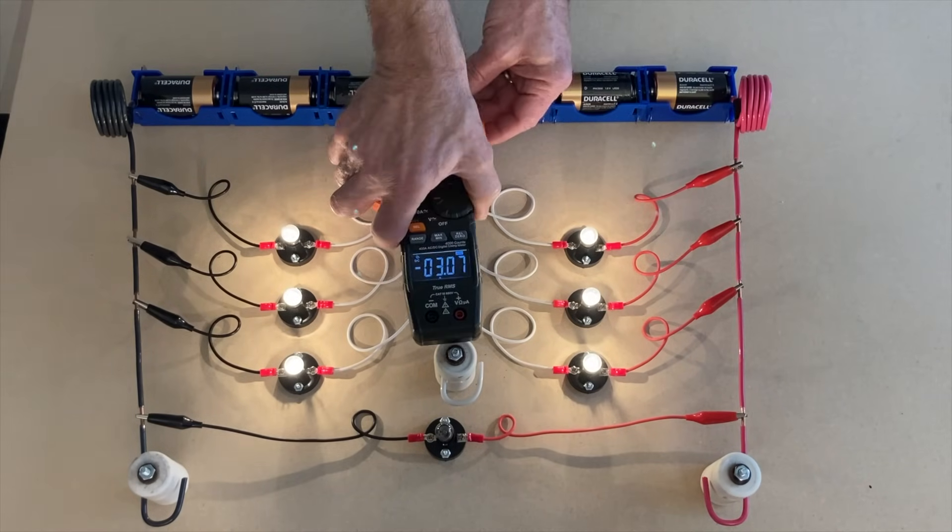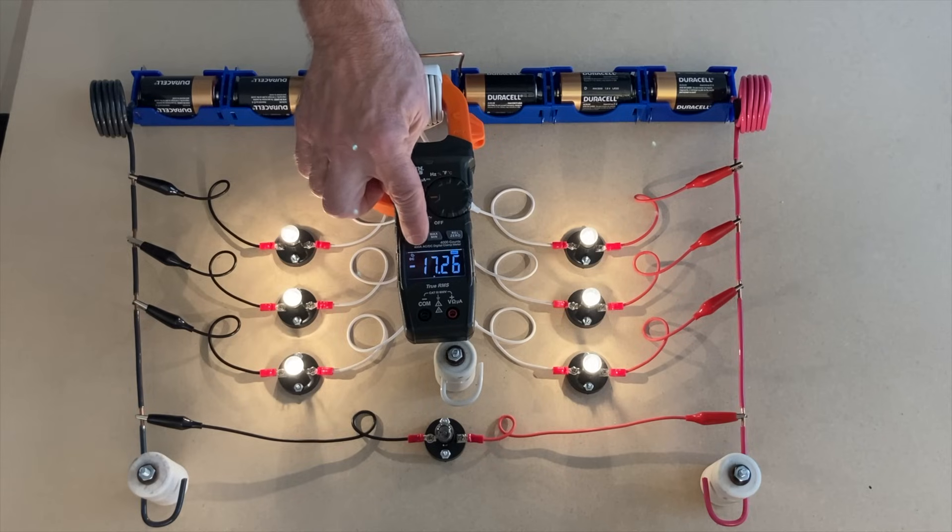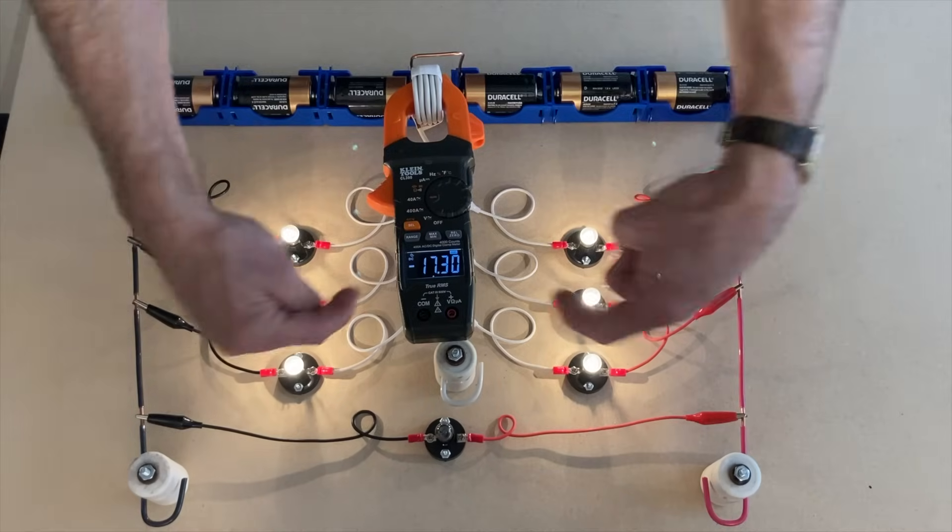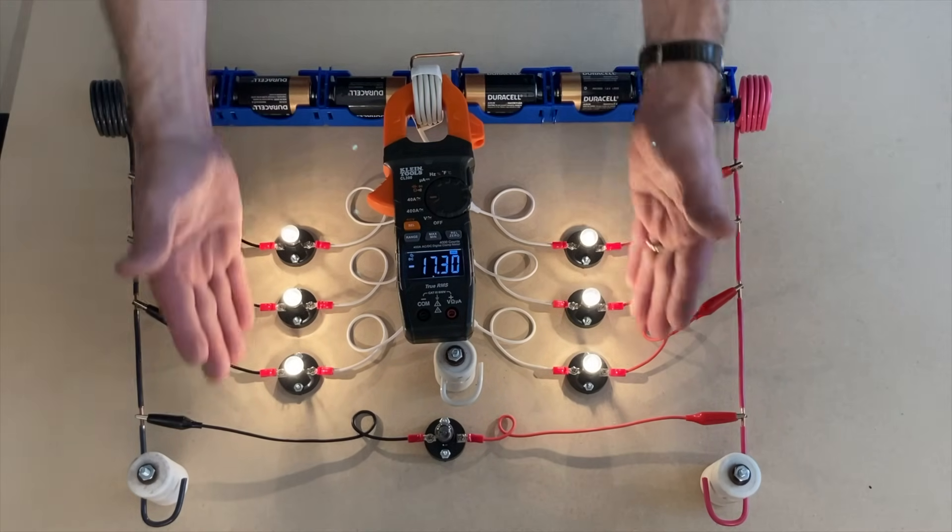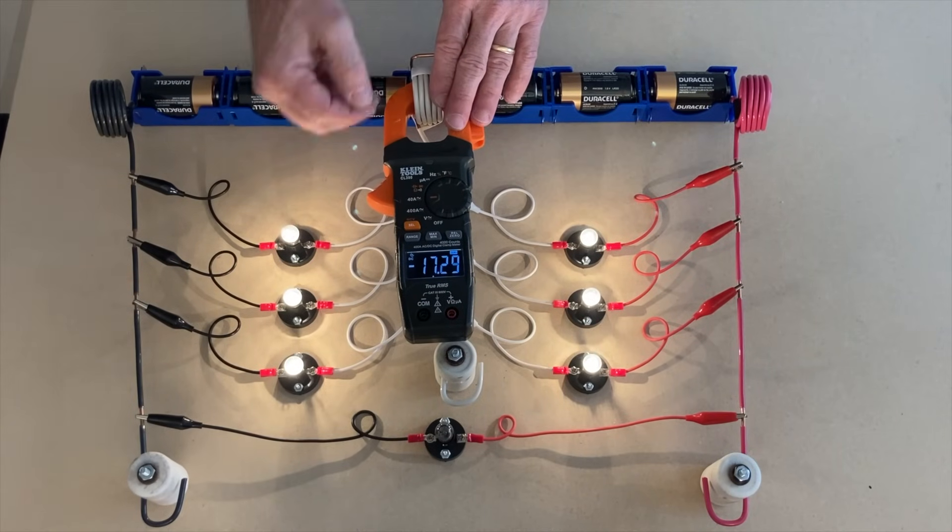How about the neutral? Oh, here we've got 17 and it's negative, a little over. It appears that the neutral is bringing back all the current rather than just the unbalanced. And since we have a balanced load, there should be no amperage on this section of the neutral going back to the source.